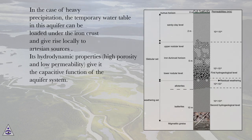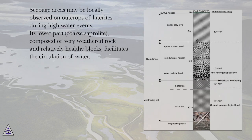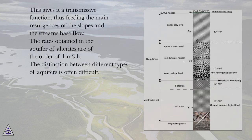Its hydrodynamic properties — high porosity and low permeability — give it the capacitive function of the aquifer system. Seepage areas may be locally observed on outcrops of laterites during high water events. Its lower part, coarse saprolite, composed of very weathered rock and relatively healthy blocks, facilitates the circulation of water. This gives it a transmissive function, thus feeding the main resurgences of the slopes in the stream's base flow.